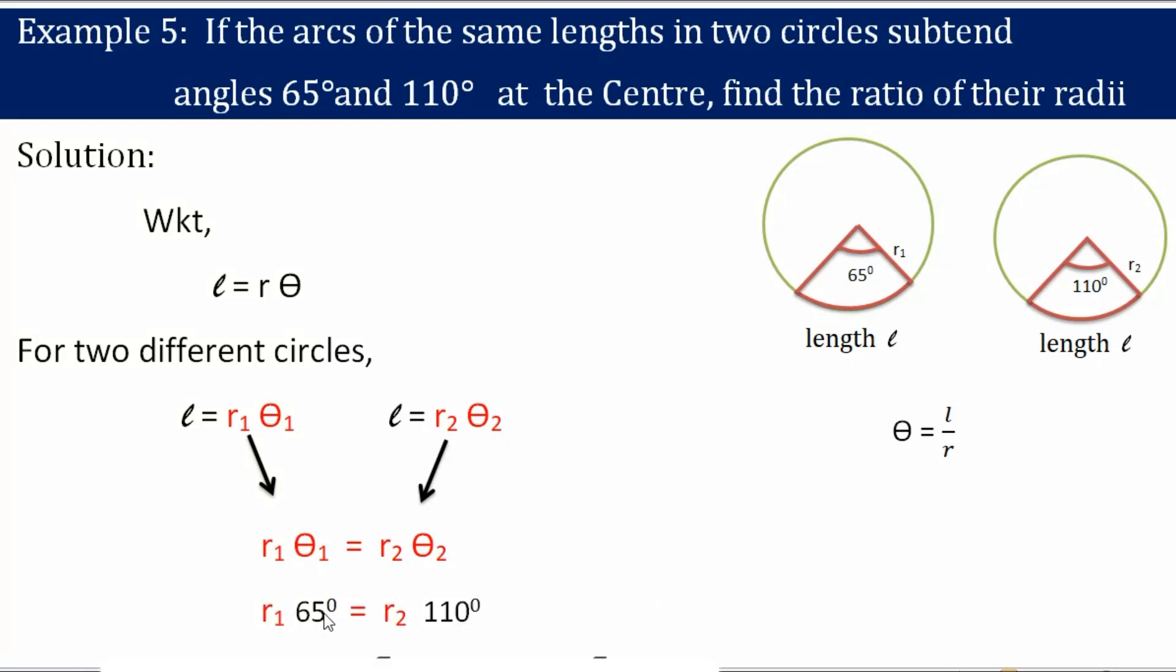Theta 1 is 65 degrees and theta 2 is 110 degrees. But here, in this relation, theta will always be in radians and not degrees. That's why we need to convert these degrees into radians.